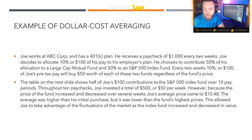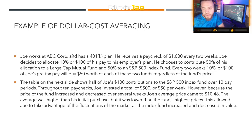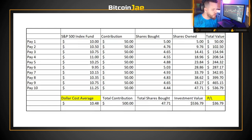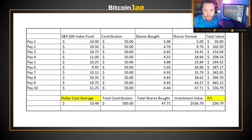Over 10 pay periods, Joe invested a total of $500, or $50 per payment. Because the price of the fund increased and decreased over several weeks, Joe's average price came to $10.48. The average was higher than his initial purchase but lower than the fund's highest prices, allowing Joe to take advantage of market fluctuations. Here's the chart so visual learners can follow along — showing S&P 500 index price, contribution, shares bought, shares owned, and total value.